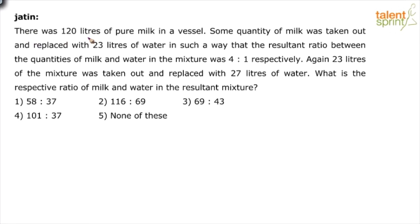There was 120 liters of pure milk in a vessel. Some quantity of milk was taken out and replaced with 23 liters of water in such a way that the resultant ratio between the quantities of milk and water in the mixture was 4 is to 1 respectively.